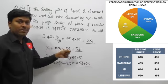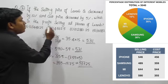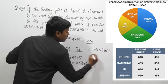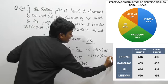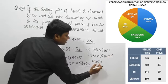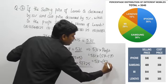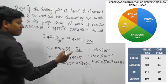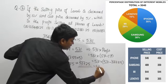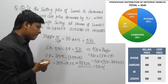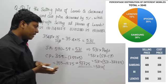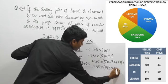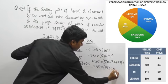We have the new selling price 531, new cost price 337.25, and total Lenovo mobiles 531. Profit per phone = selling price − cost price = 531 − 337.25 = 193.75. Now we need to multiply 531 × 193.75 to find the total profit.